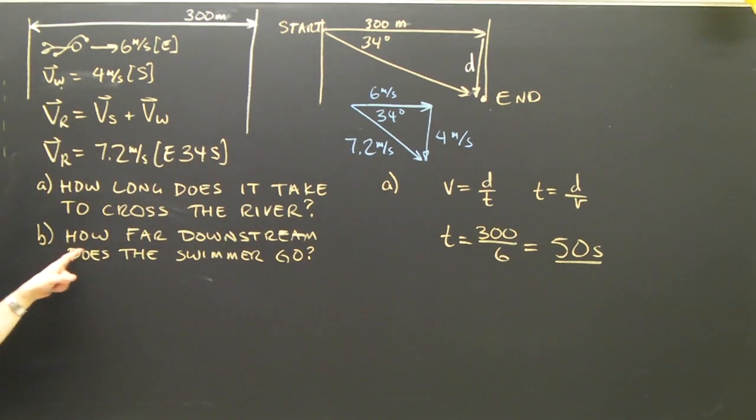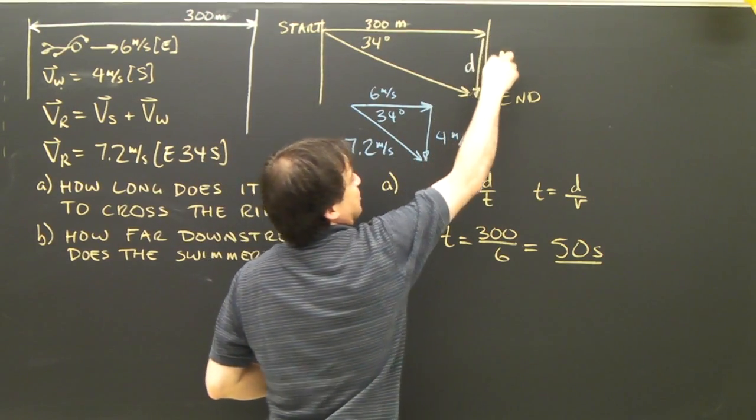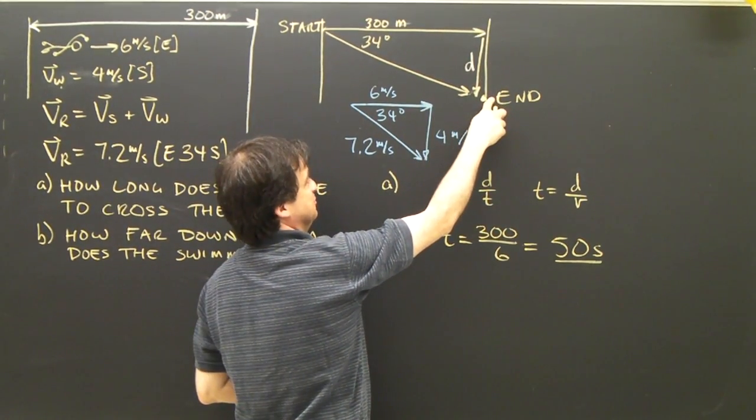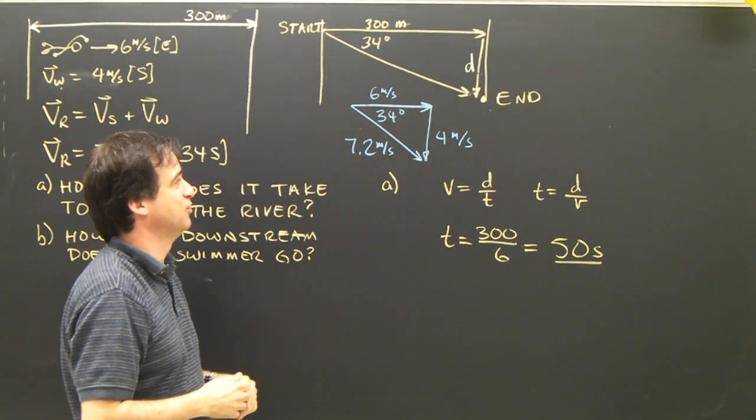Okay, let's look at part B. How far downstream does the swimmer come? Well, the swimmer started here and ends up this far downstream. So this displacement goes with this velocity. They're a pair. So I can use those.